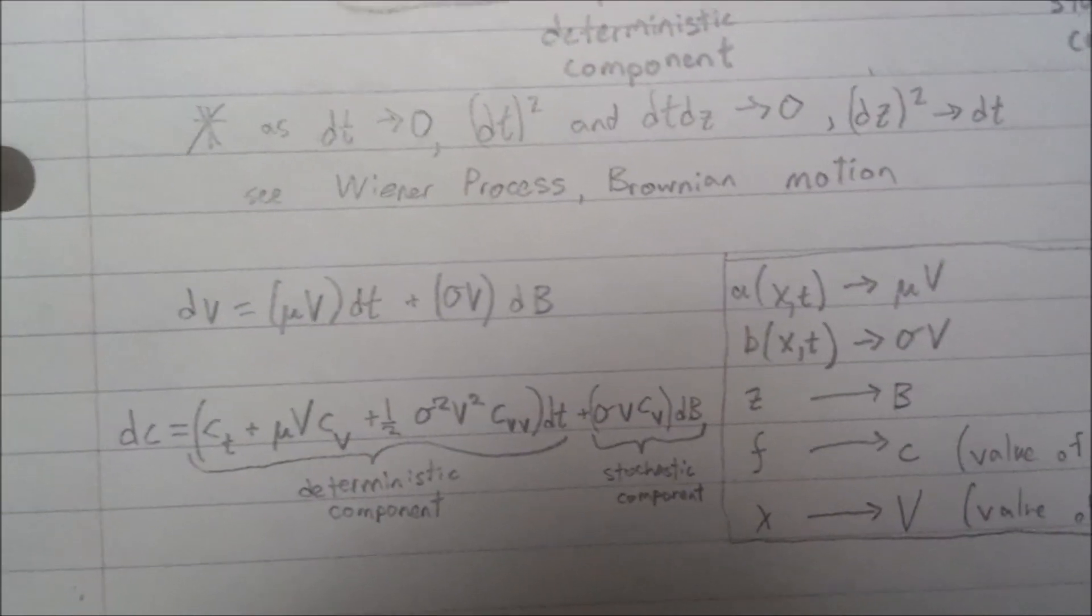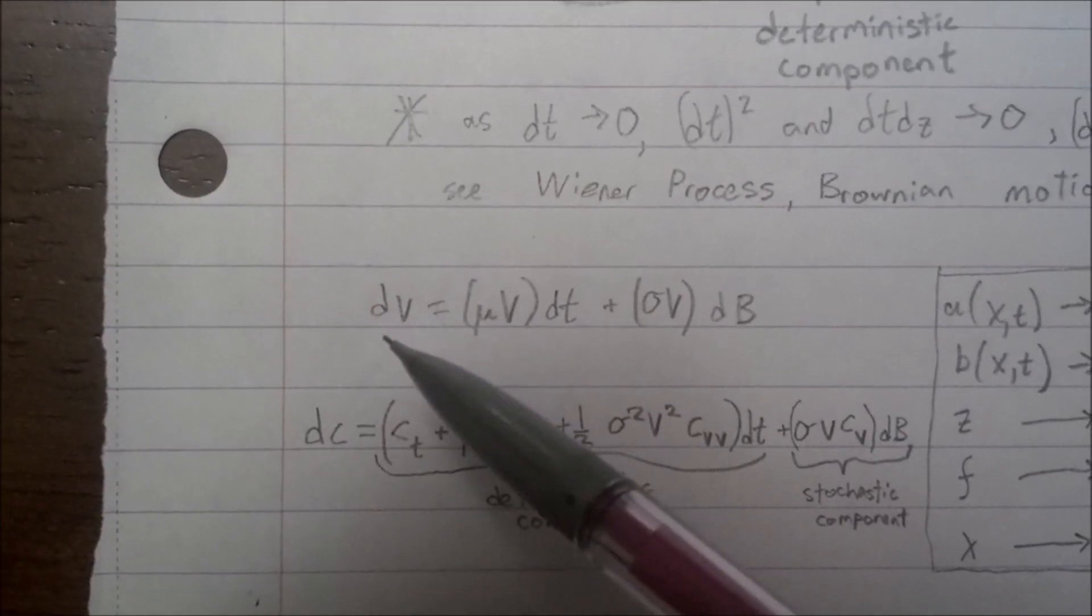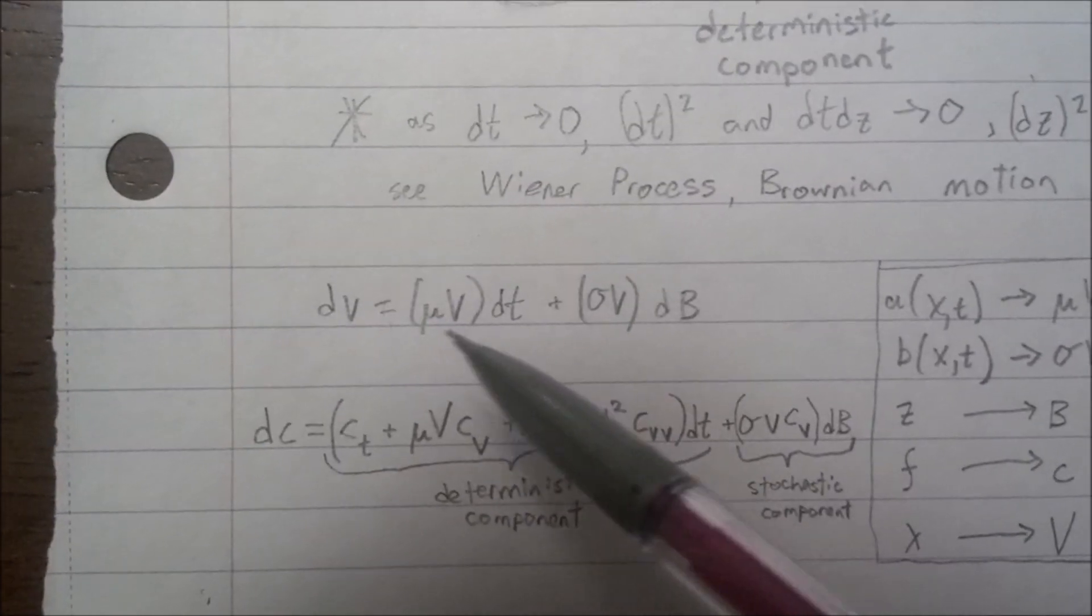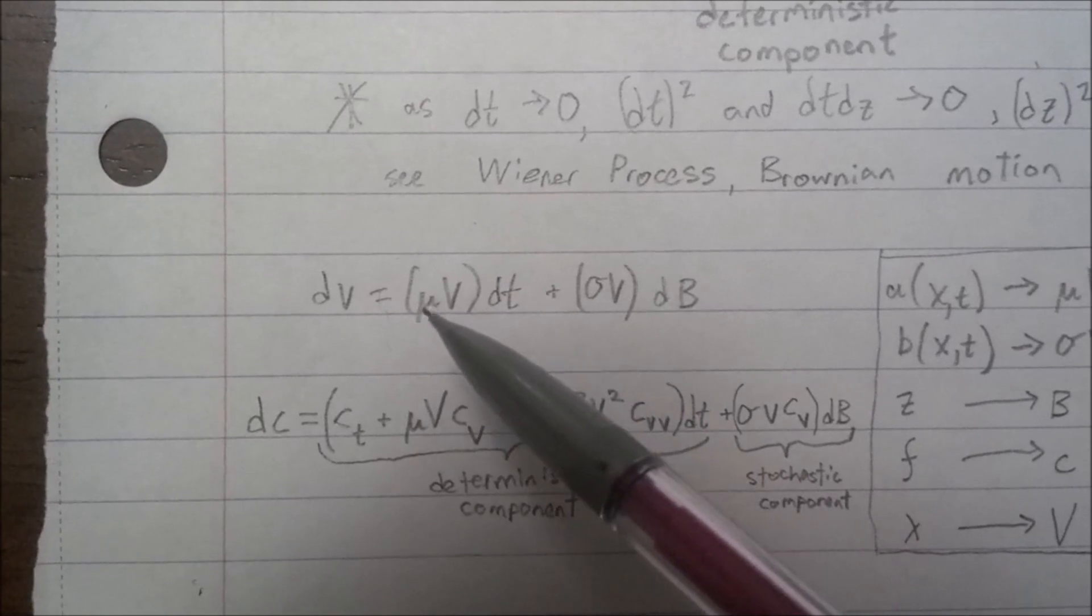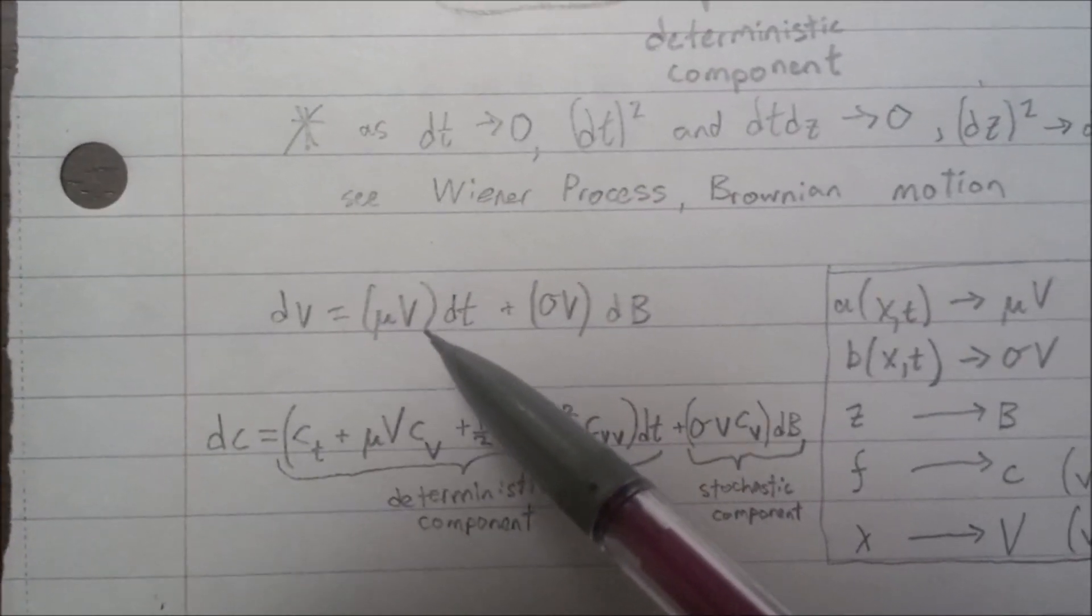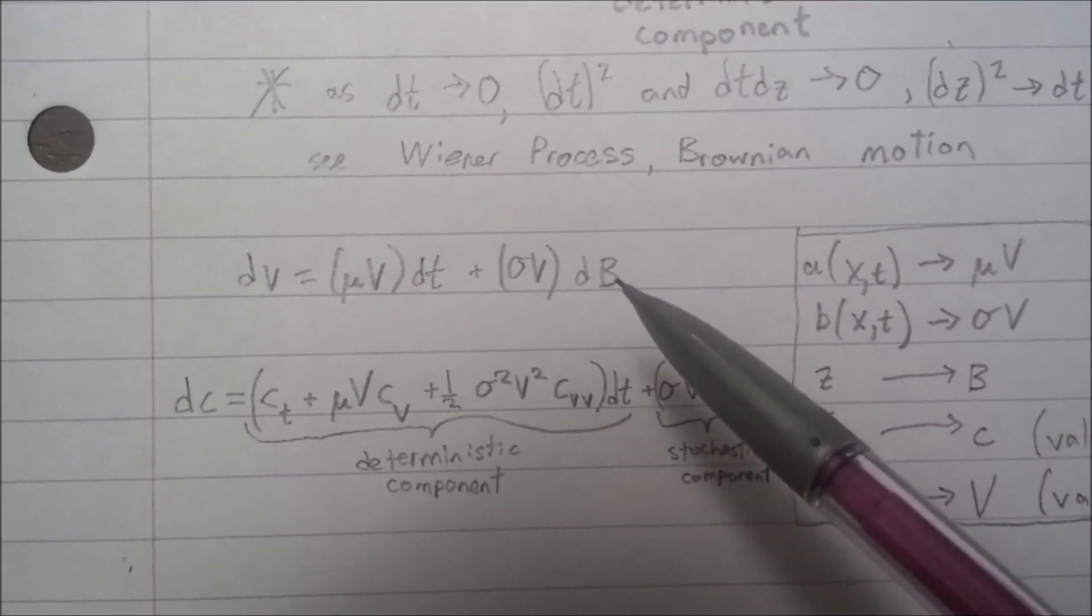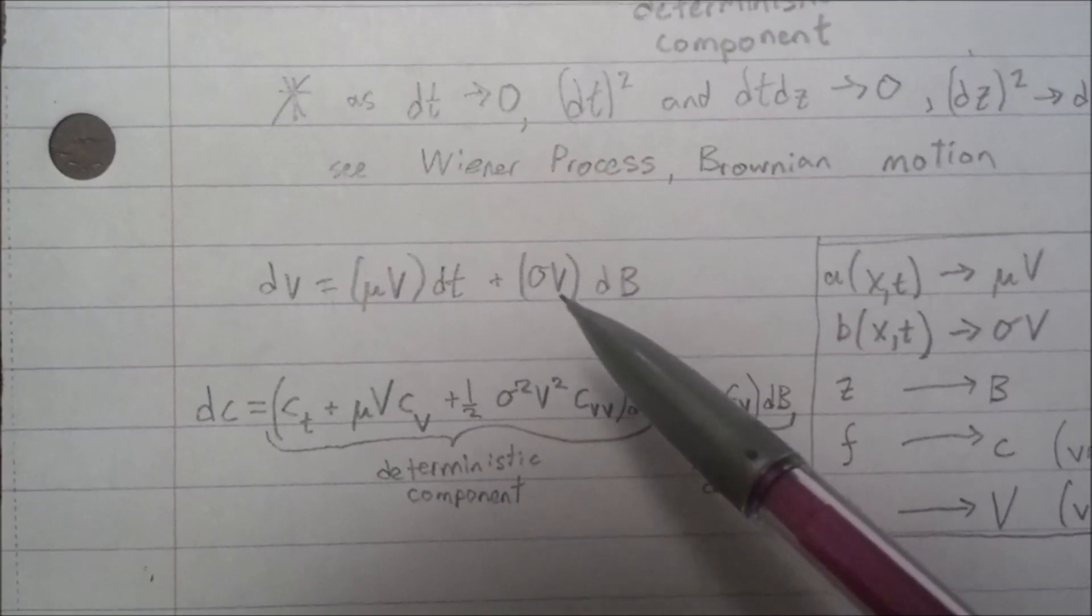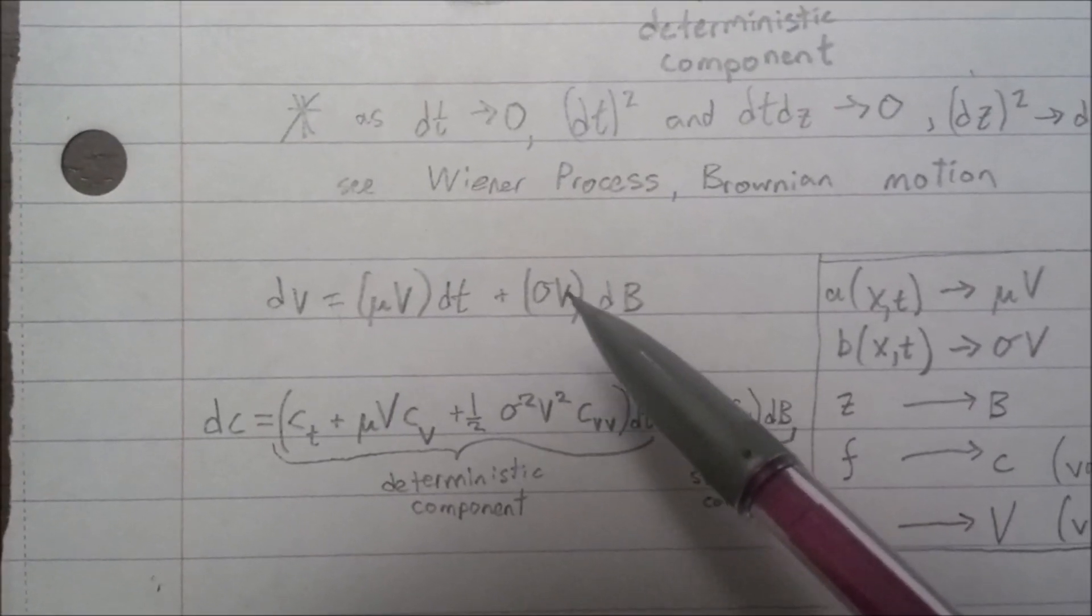Now, to use this, to put this into the Black-Scholes equation, you can see we have where v is the value of a stock. And we will claim that the differential of the value of a stock, it's going to be related to something that's related to the time, and it's going to be related to the mean return of the stock. And finally, we're going to relate it to something that's a random variable, and that's related to the price of the stock and also the volatility of the stock.